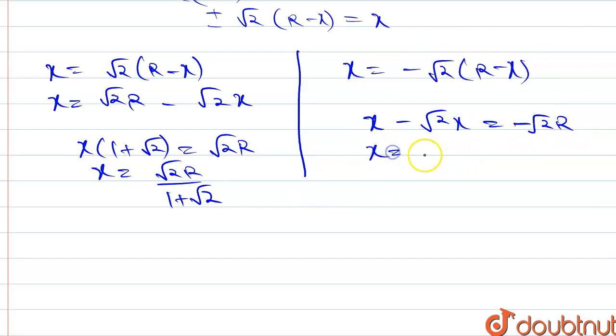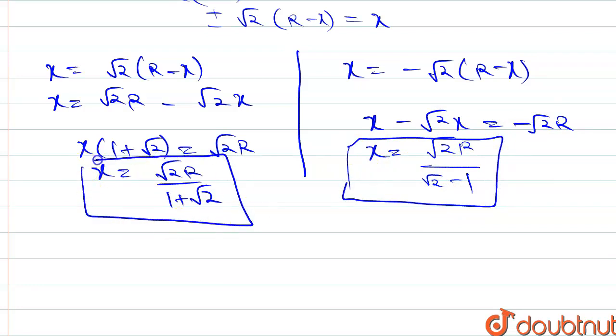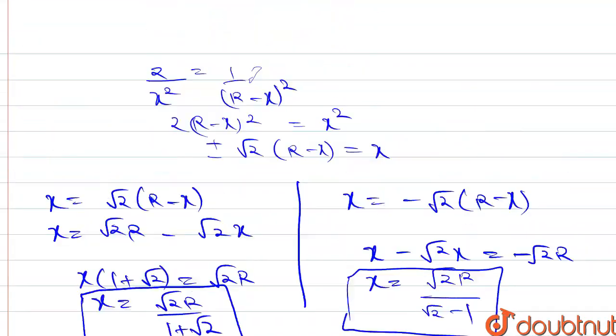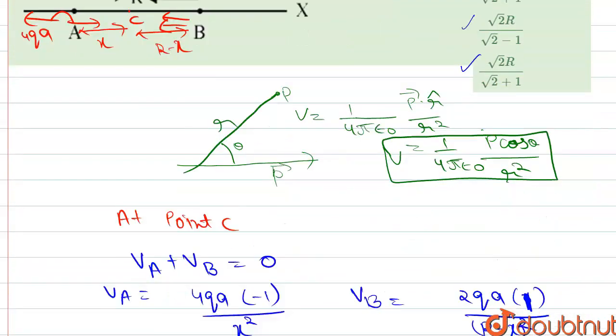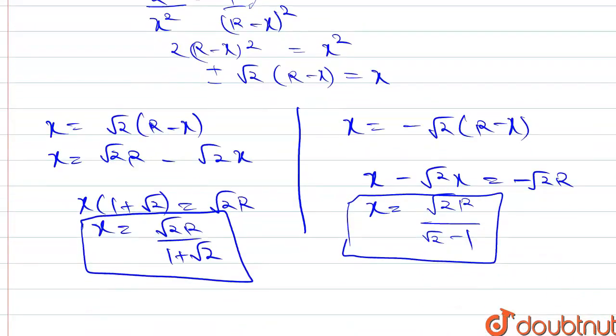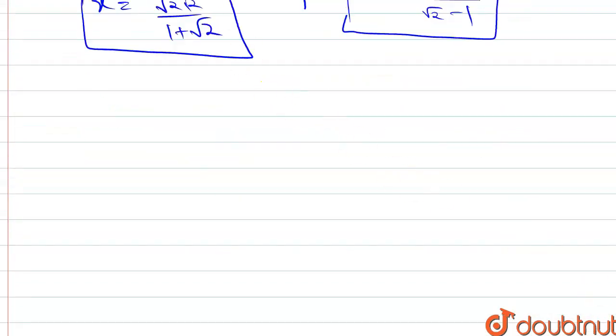Similarly, x minus root 2 x equals minus root 2 r, then x equals root 2 r over (root 2 minus 1). We have two values of x. In the question, we have given both the options, so we have to check which option is correct.